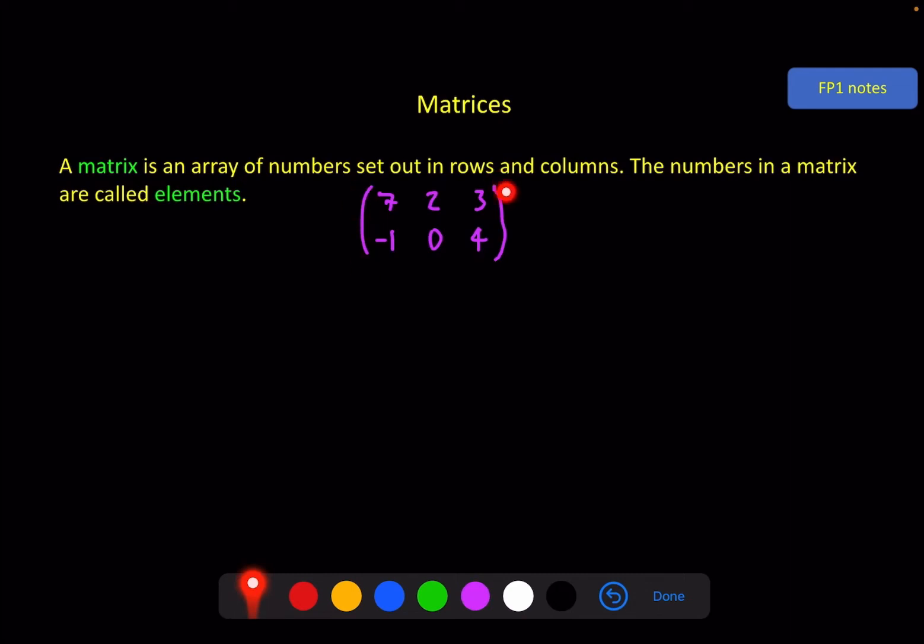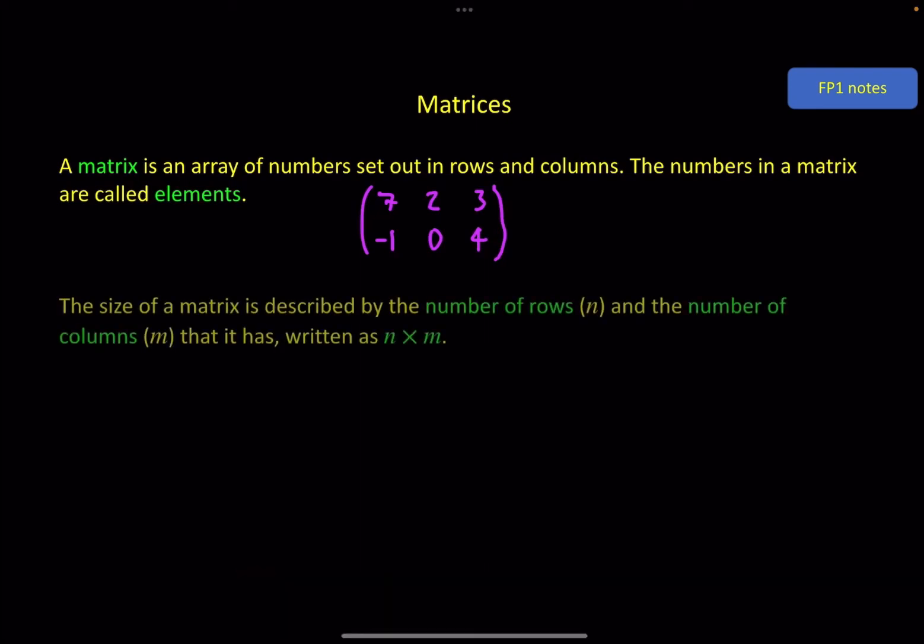And you can see I'm using the brackets very much like the vectors, but this time, instead of one column, we've got three columns. And I can refer to an element. Let's say I want to talk about this four over here. I can say it's in the second row, third column.